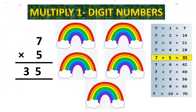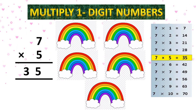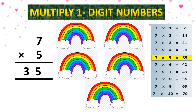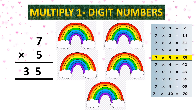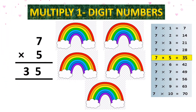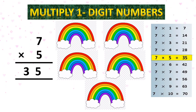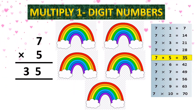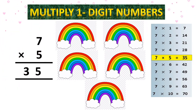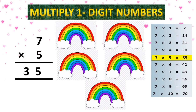Bita, it is not necessary that you read the times table of 7. Ye zaroori nahi hai ki aap 7 ka hi table padhain. Agar aapko 5 ka table aata hai, toh aap 5 ka table bhi 7 times padhna hai. 5 ones are 5, 5 twos are 10, 5 threes are 15, 5 fours are 20, 5 fives are 25, 5 sixes are 30, and 5 sevens are 35.